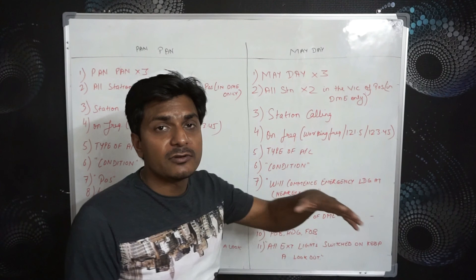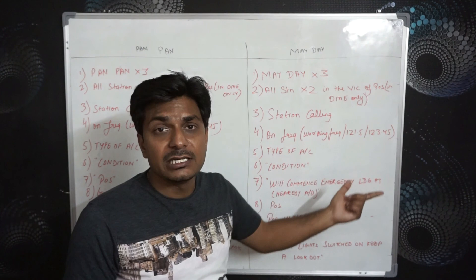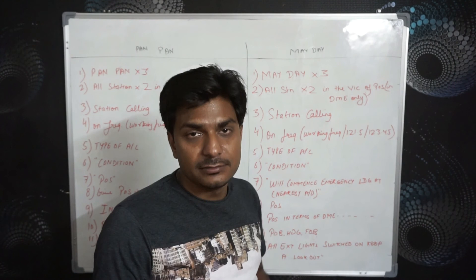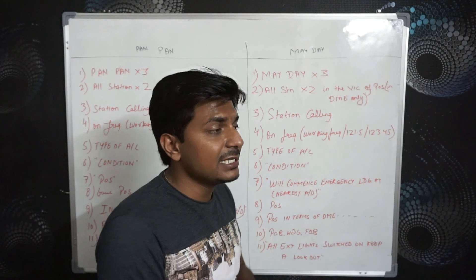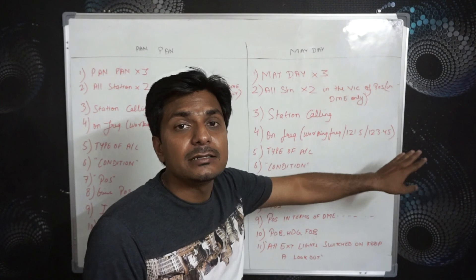And 123.45 — I have already discussed this and used it in the weather deviation format. When ATC doesn't approve your deviation, you contacted the traffic using this frequency. So 123.45 is the inter-pilot frequency. So we have: working frequency, emergency frequency 121.5, and inter-pilot frequency 123.45.